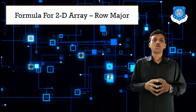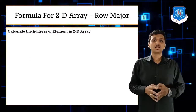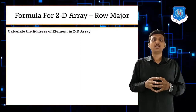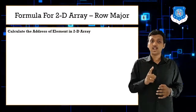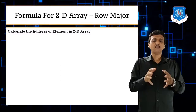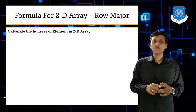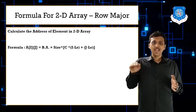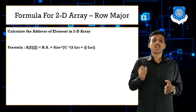Let's start with the formula for row major. As you know, in a single dimensional array the formula is A[i] = base address + (i - L) × size. But now we have 2D arrays. In a 2D array, elements are stored in two different patterns: the first one is row major and the second one is column major. In row major, elements are stored row-wise, and in column major, elements are stored column-wise.